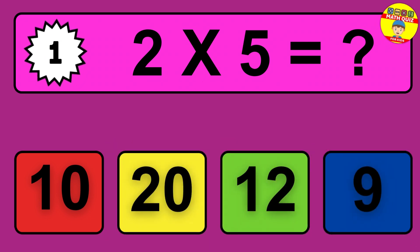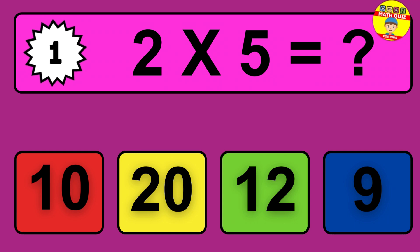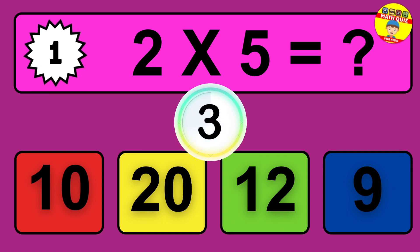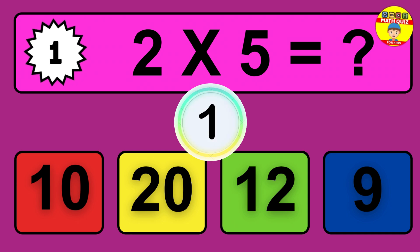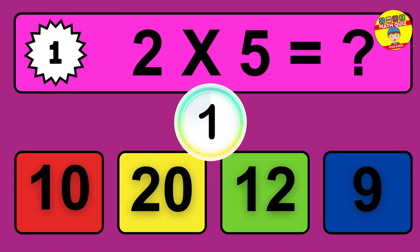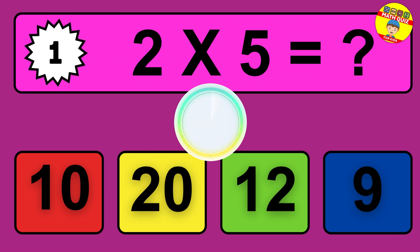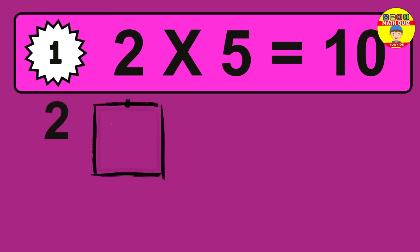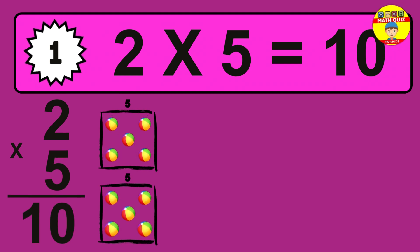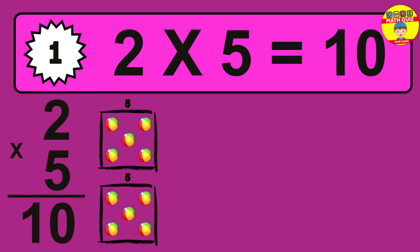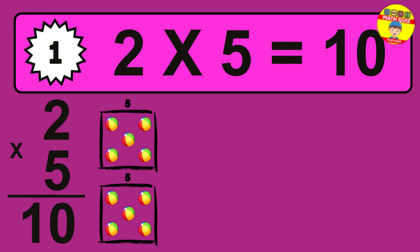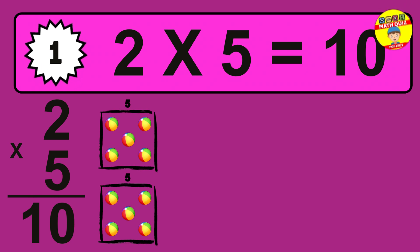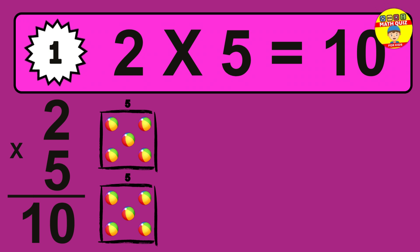Question 1. 2 times 5 equals what? The answer is 2 times 5 is 10. To calculate, we have 2 groups with 5 balls each one. So how many balls do we have? 10 balls.